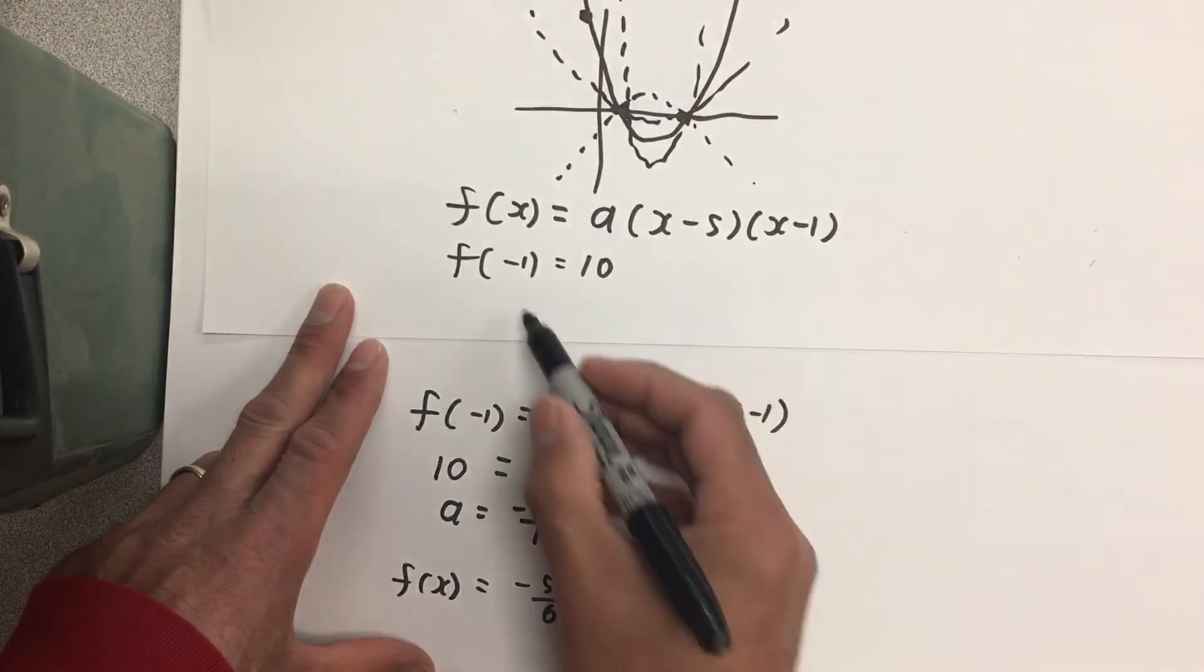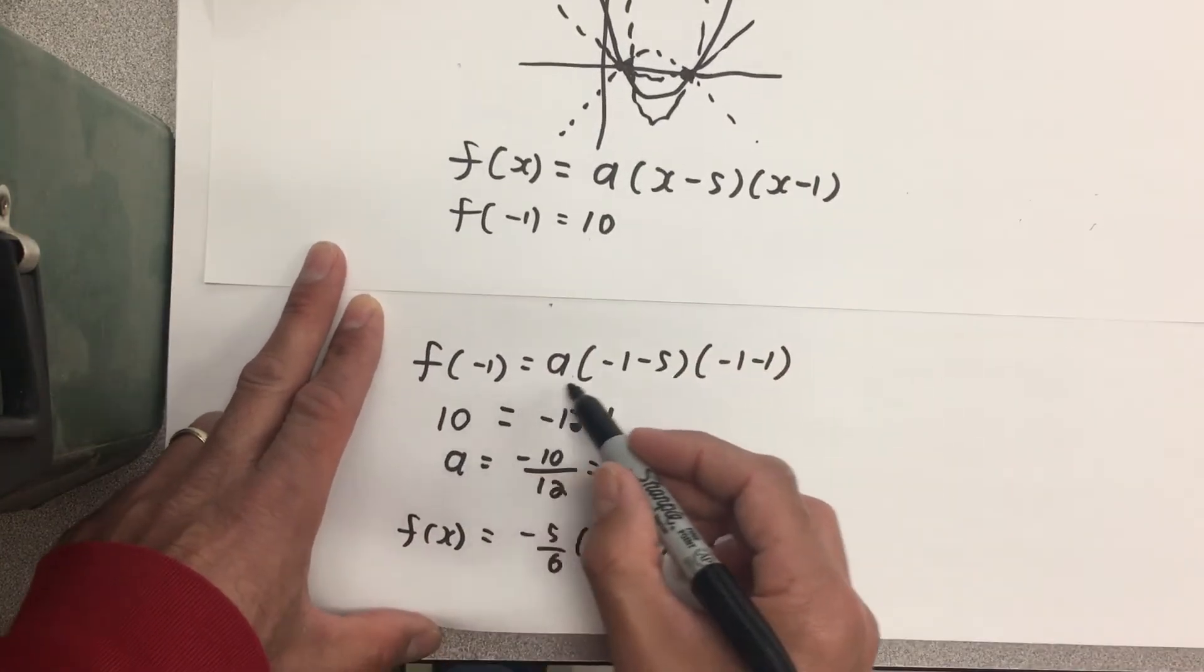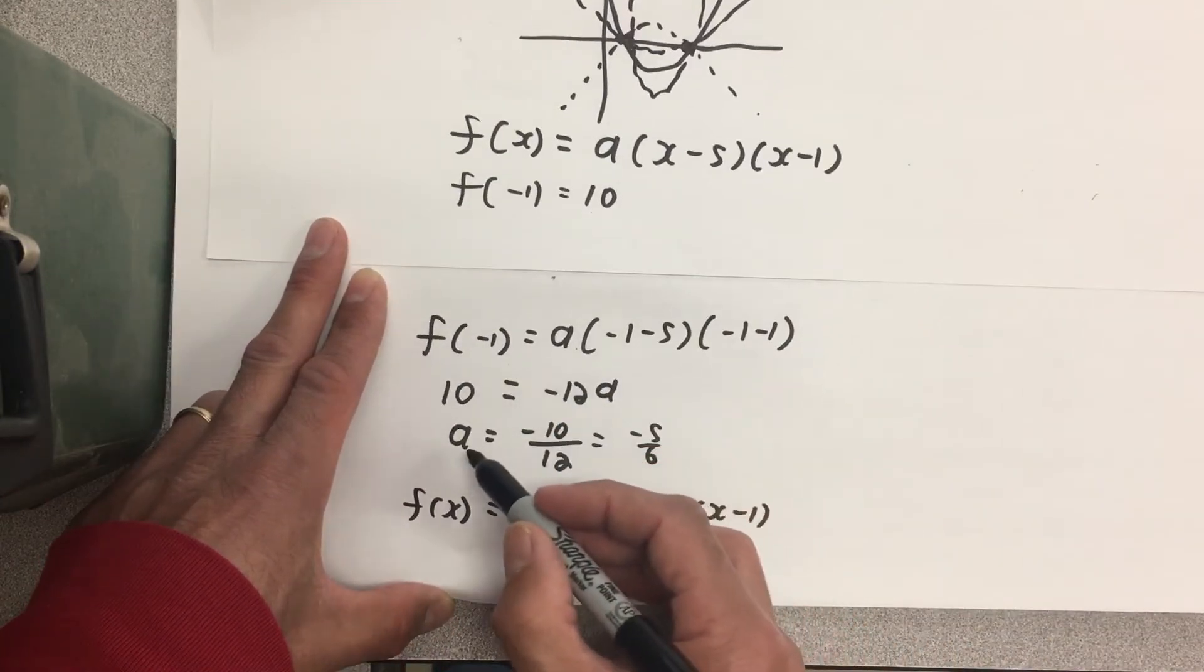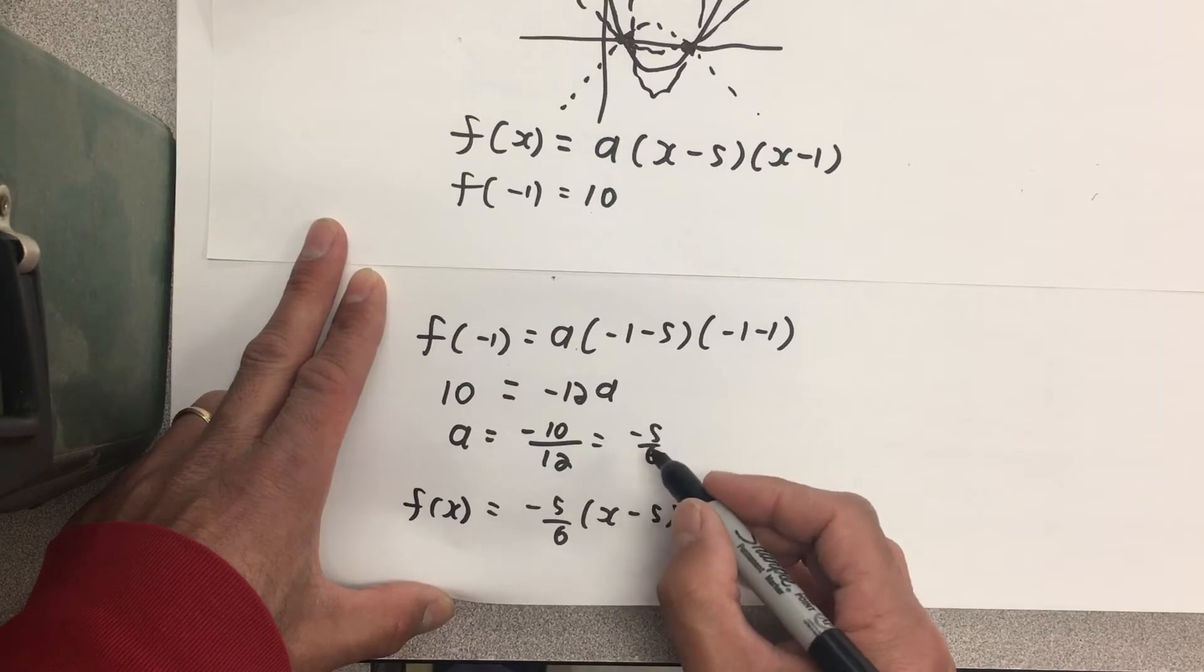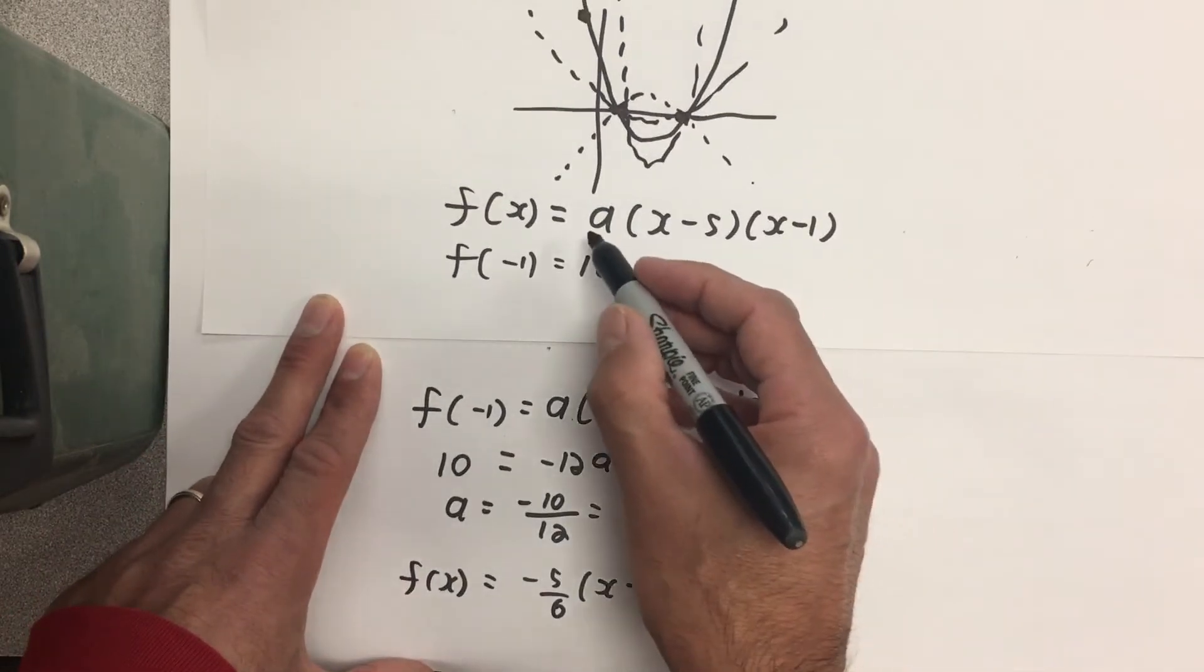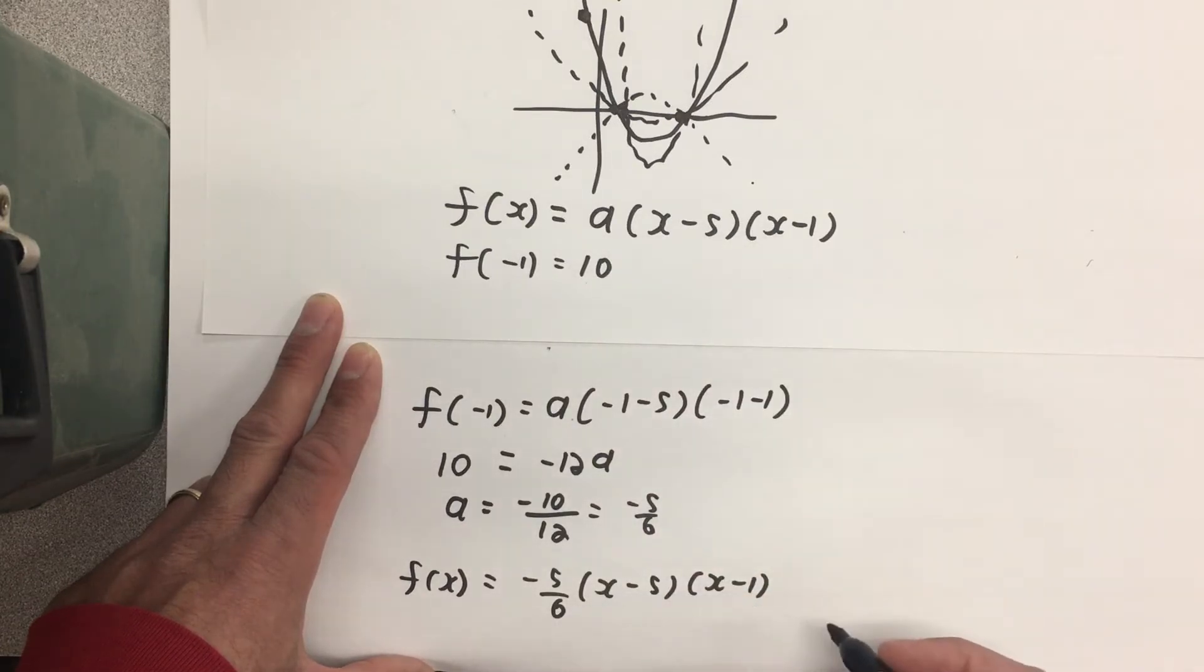So I use the value, when x is -1, y is 10, plug that into my equation, and rearrange things to get a by itself. Now that I have a's value, I can put it back into my original writing down of the function with the required roots to get the full quadratic.